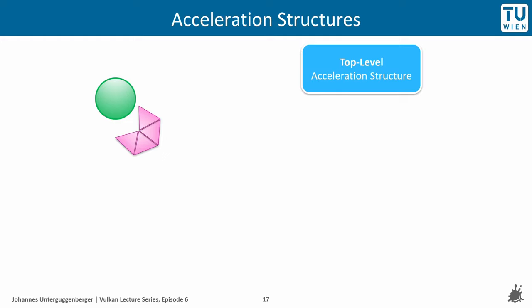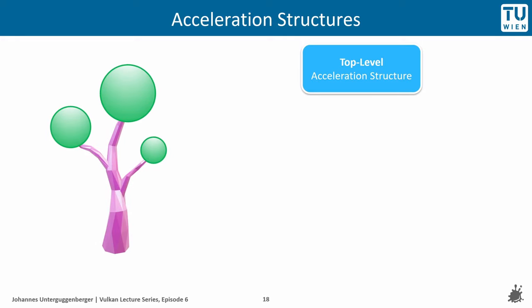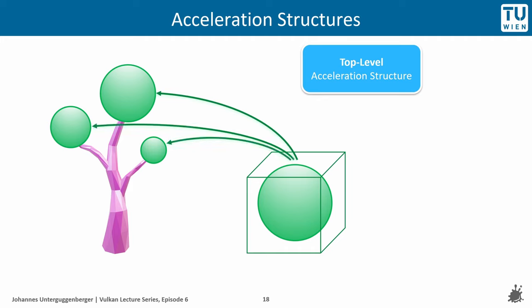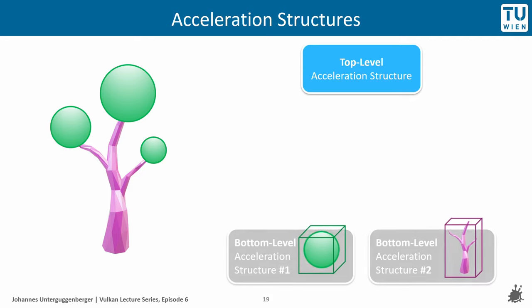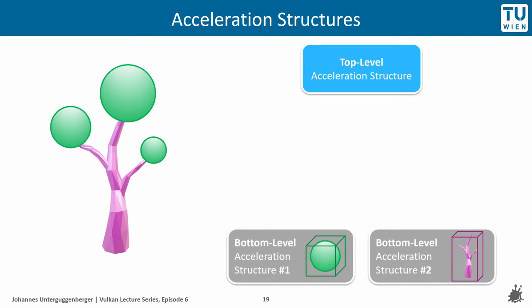Let us make the example geometry more interesting by adding more instances of the sphere and using a different triangle mesh — the trunk of a tree, with three instances of the green sphere for the tree top. We can construct this scene by specifying the sphere only once and making three instances, each scaled and translated differently. These two base geometries — the sphere and the tree trunk — are stored in so-called bottom-level acceleration structures, with a separate one for each.